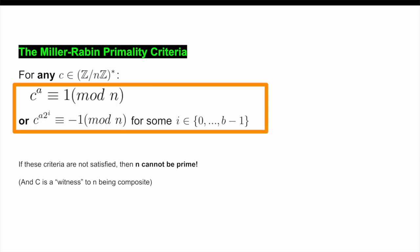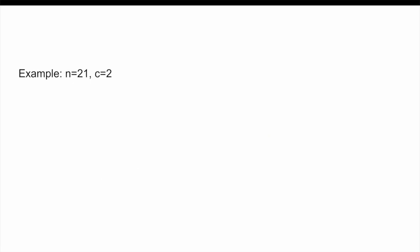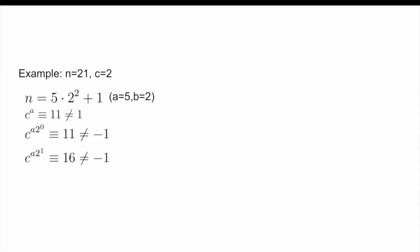Now, let's just do an example of the test in action to see how it would actually work in practice. Let's take N equal to 21 and C equal to 2. In this case, writing A and B how we originally defined them, A becomes 5 and B becomes 2. As you can see here, the criteria are in fact not met. So therefore, we are guaranteed that N is not a prime number, and we say that C = 2 is a witness to this fact. And indeed, 21 is not prime — it is 3 times 7.